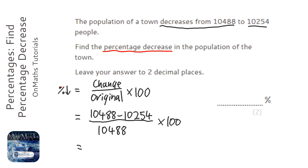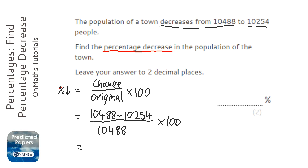I'm going to do that in the calculator: fraction button, 10488 minus 10254, over 10488, and then outside the fraction times by 100.